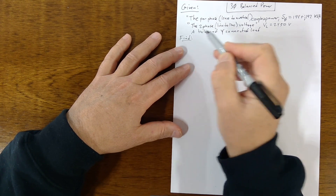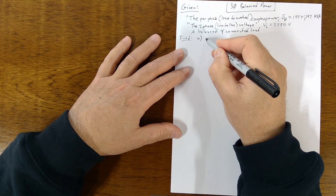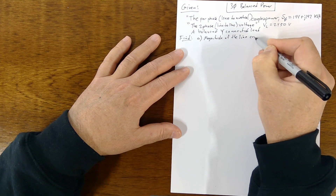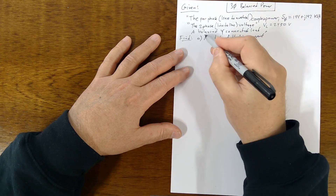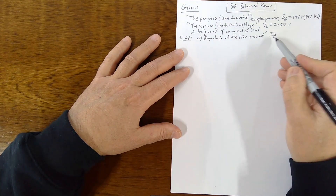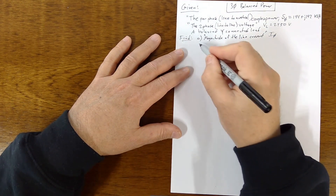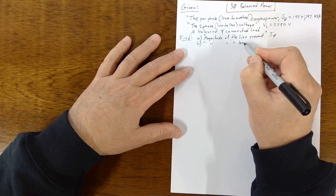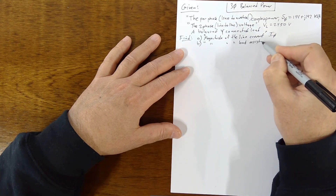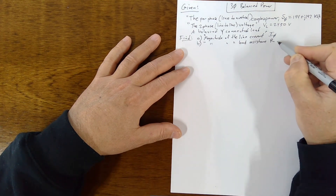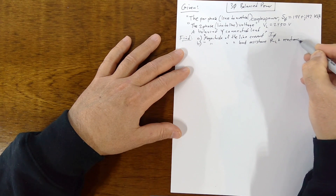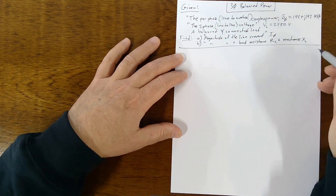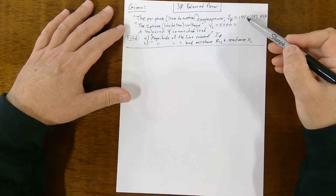We're asked to find a couple of things: the magnitude of the line current I_φ — just the magnitude of one of the three line currents — and then the magnitude of the load resistance R_load and the reactance X_load.